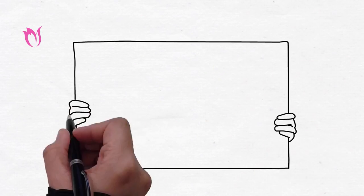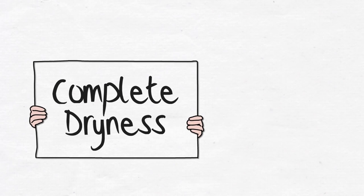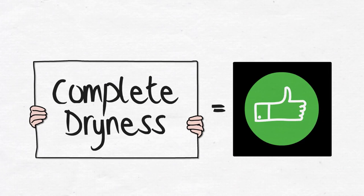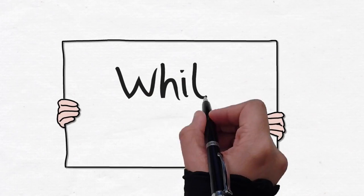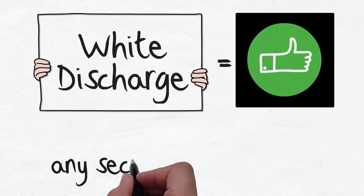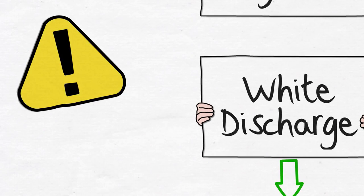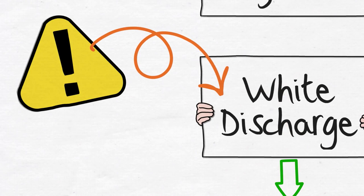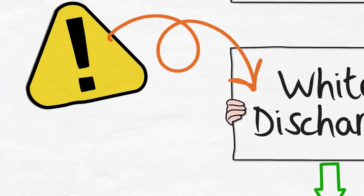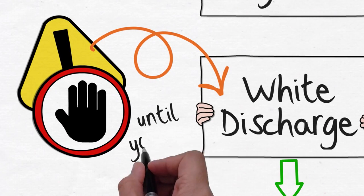So in a nutshell, complete dryness with absolutely no yellowness or brownish discharge means it's over. White discharge means it's over. Any secretion after white discharge is not haid. But if it is normal for you to see the white discharge at the end of the menstrual flow, then you should not rush, wait until you see it.